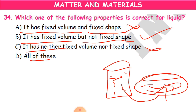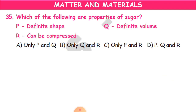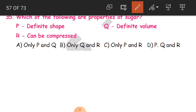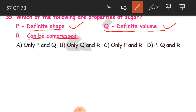Question 35: Which of the following are properties of sugar? P is definite shape, Q is definite volume, R is can be compressed. Sugar has a definite shape and a definite volume, so only P and Q is the answer. Sugar as we use it in our kitchen has a definite shape and a definite volume.